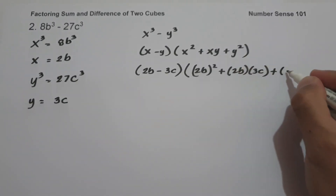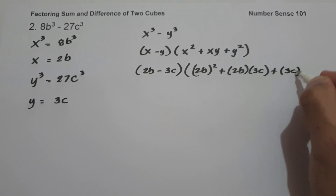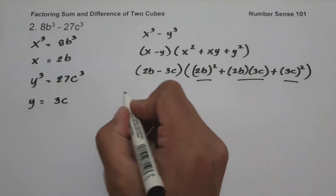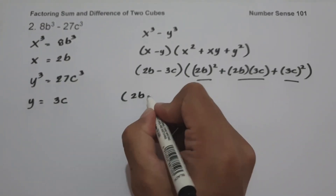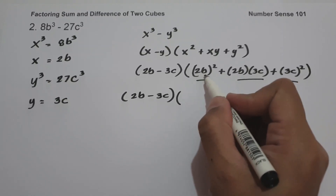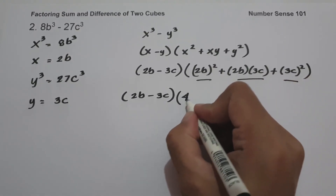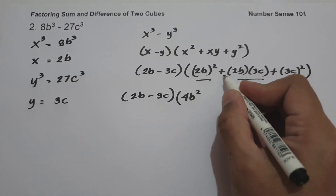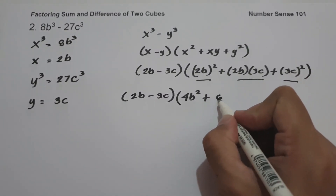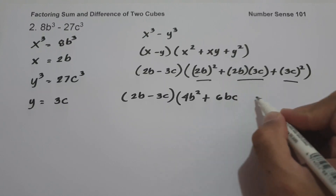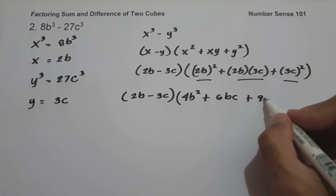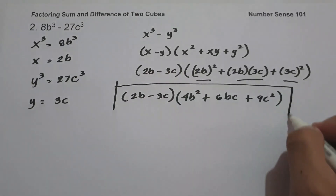Then y² is (3c)². Let us simplify: we have (2b − 3c) times the quantity 4b² + 6bc + 9c², and this is our answer.